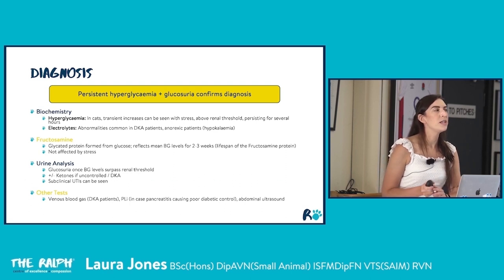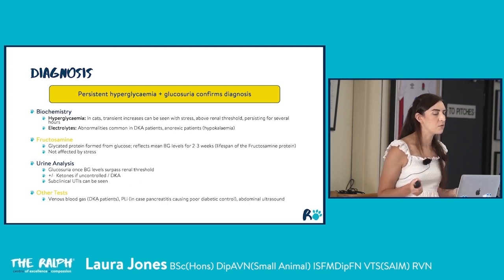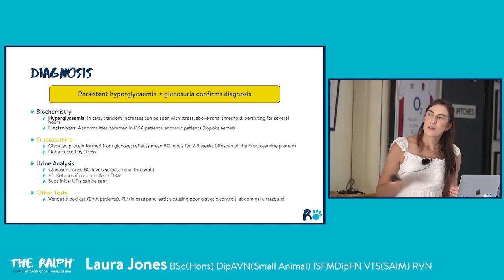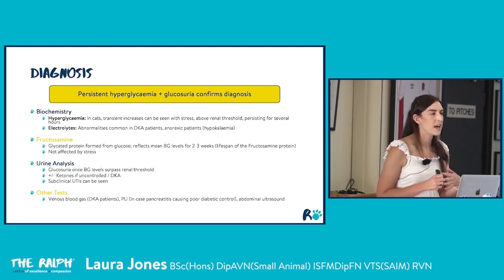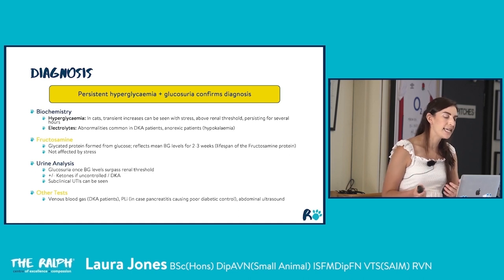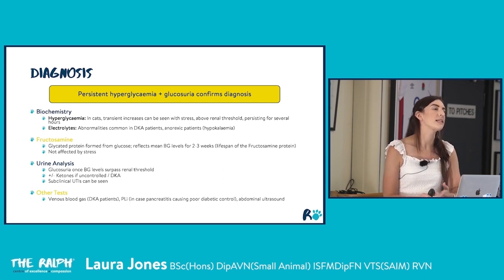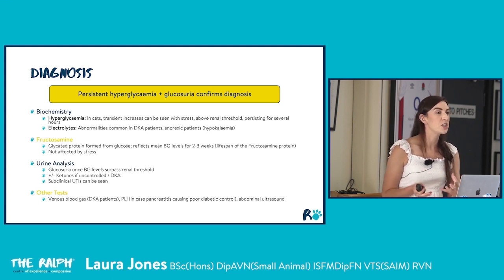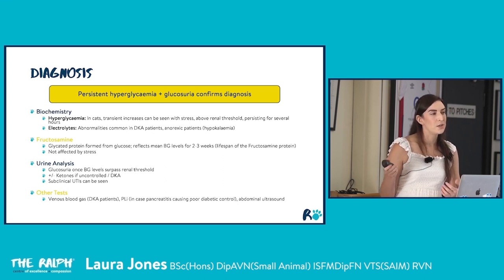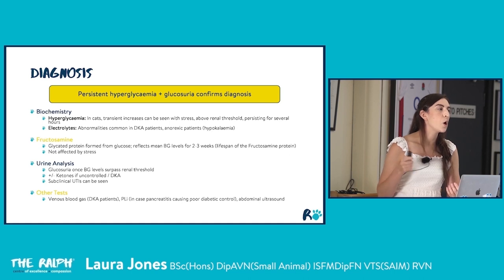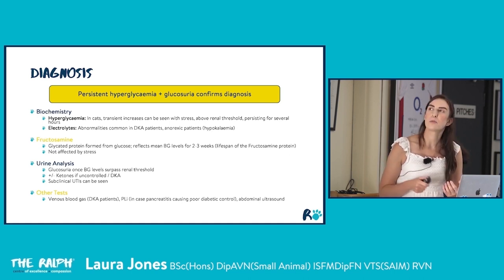Urine analysis will show glucosuria once blood glucose surpasses the renal threshold, and potentially ketonuria in poorly controlled diabetics or DKA cases. Many diabetics can have subclinical urinary tract infections because glucose in the urine is a food source for bacteria and the urine is often dilute due to PUPD — so we routinely perform urine culture on our diabetic patients.